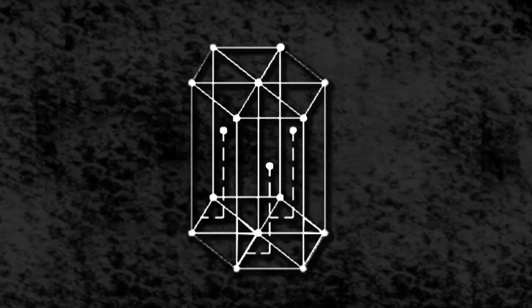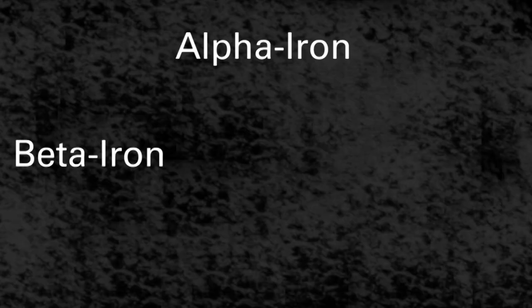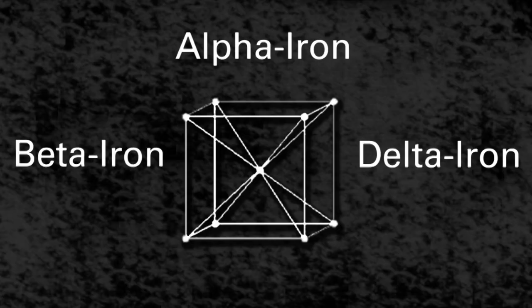So one allotrope of iron can change into another allotrope. The three most common allotropes each have a cubic structure. Alpha iron, beta iron, and delta iron each have a body-centered cubic structure.